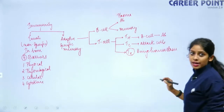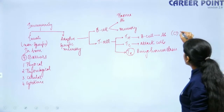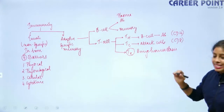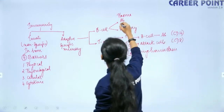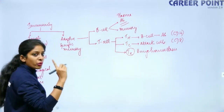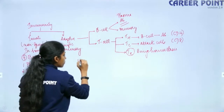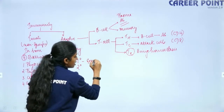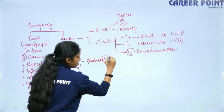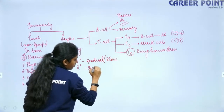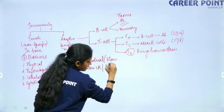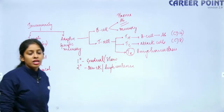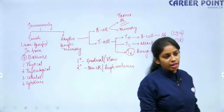T helper cells have the CD4 receptor and cytotoxic T cells have the CD8 receptor — CD stands for cluster of differentiation. Also remember, you have two types of immune response: primary response, which is gradual and slow, and secondary response, which is quick and of high intensity, based on the memory cell.